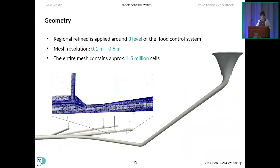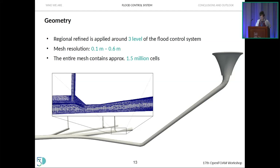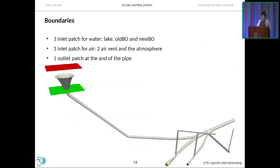The geometry was constructed with Blender using technical plans and on-site inspection. The mesh was reconstructed using SnappyHexMesh with three levels of refinement, resulting in mesh resolution between 0.1 and 0.6 meters and approximately 1.5 million cells. Boundary conditions include three inlet patches for water (the lake and the two bottom outlets) and three patches for air (the atmosphere and the two air vents), with the outlet at the end of the pipe.